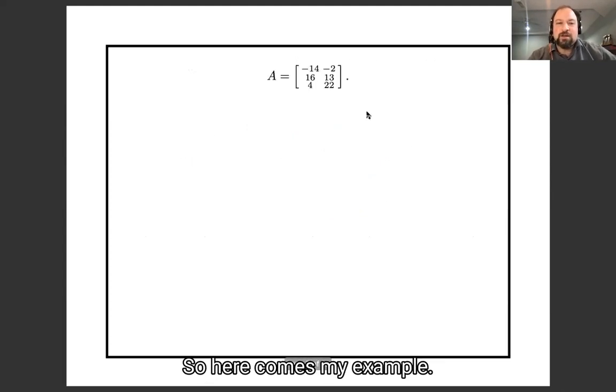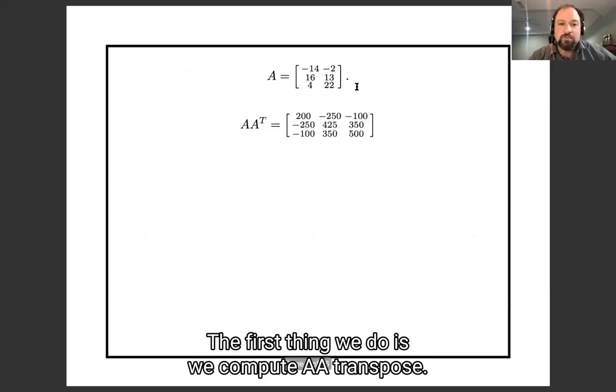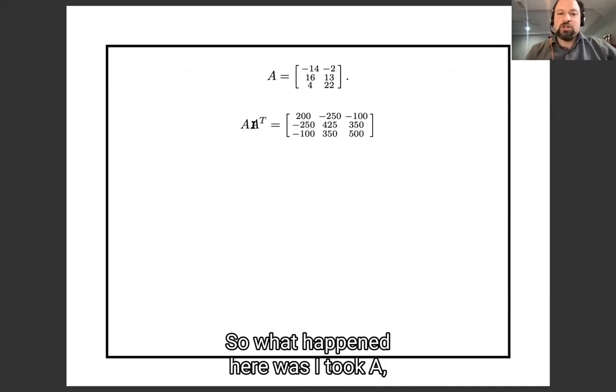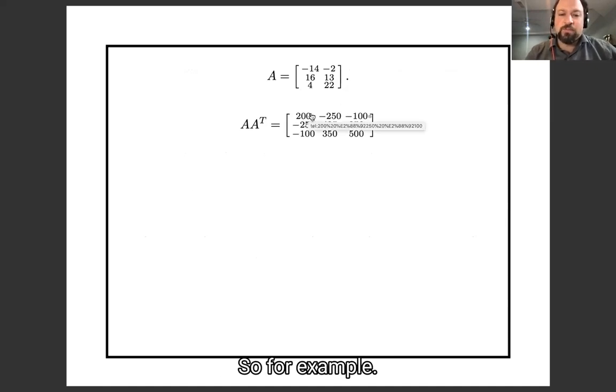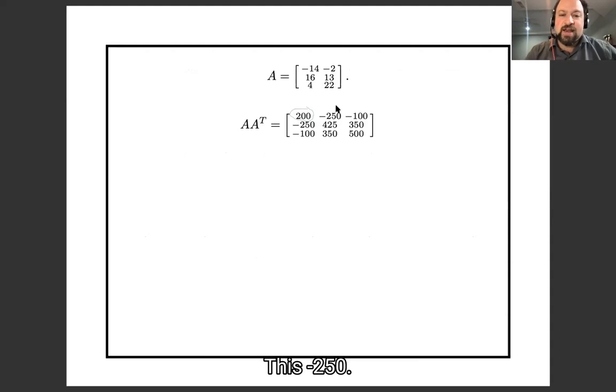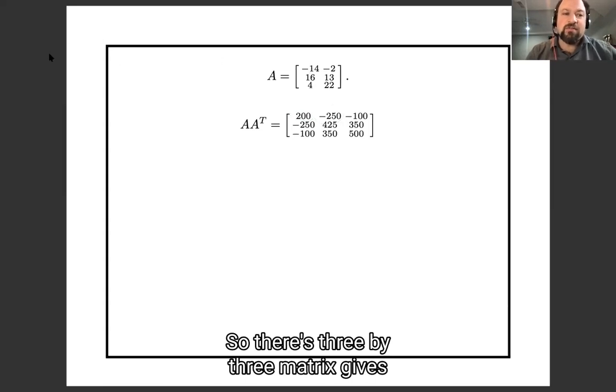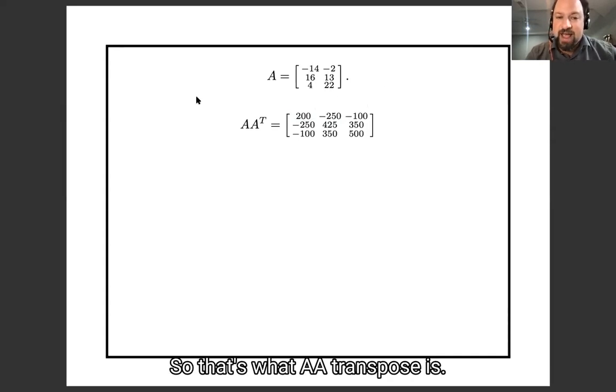So here comes my example. This three by two matrix, we're going to compute its singular values and its singular vectors. The first thing we do is we compute A, A transpose. So what happened here was I took A, I took A transpose, and I multiplied them. So for example, this 200 up here, that was computed as 14 squared plus 2 squared. This negative 250, that was the dot product of this first row by this second row. So this three by three matrix gives the dot product between the different rows of this three by two matrix. So that's what A, A transpose is.